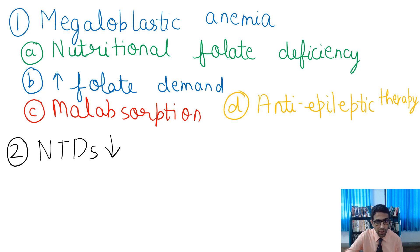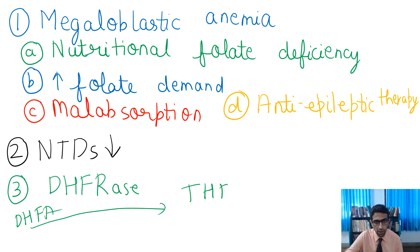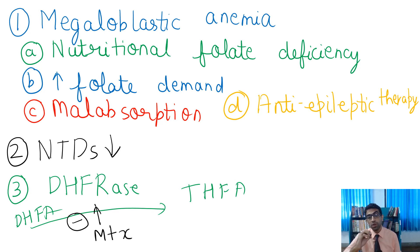The third use: the ready-made active form of folic acid. Methotrexate, as you know, basically causes inhibition of dihydrofolate reductase. This enzyme brings about the conversion of dihydrofolic acid into tetrahydrofolic acid. This conversion is inhibited by methotrexate.